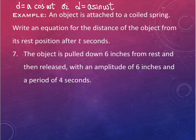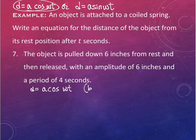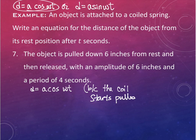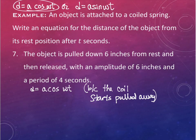The coil starts pulled away from its resting position, so we use cosine. It's pulled down six inches, so the amplitude a is negative six - pulled down means negative, pulled up would be positive. So d = -6·cos(ωt).